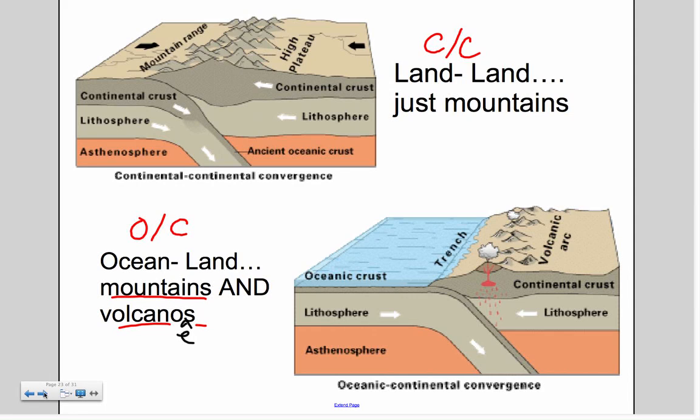Here's two examples. A continent to continent is land to land, so I just get mountains. Ocean to continent is ocean to land, and I can get mountains or volcanoes.